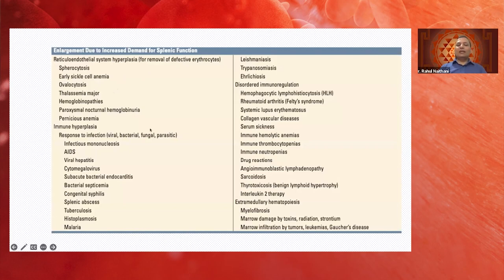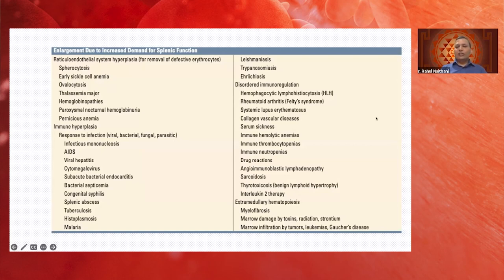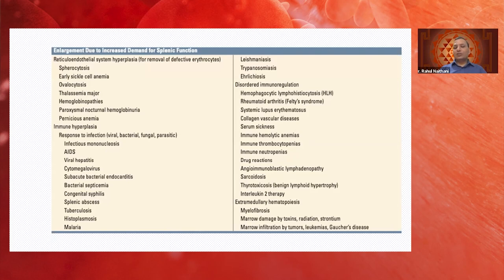Immune hyperplasia as a mechanism — generally a response to infection (bacterial, fungal, viral, or parasitic) — includes infectious mononucleosis, AIDS, hepatitis, CMV, subacute bacterial endocarditis, septicemia, syphilis, splenic abscess, tuberculosis, histoplasmosis, malaria, kala-azar, and trypanosomiasis. Disorders of immune regulation include hemophagocytic lymphohistiocytosis, Felty's syndrome (triad of neutropenia, splenomegaly, and arthritis), collagen vascular diseases, serum sickness, immune hemolytic anemia, secondary immune thrombocytopenia, immune neutropenia, drug reactions, sarcoidosis, thyrotoxicosis, and angioimmunoblastic lymphadenopathy.